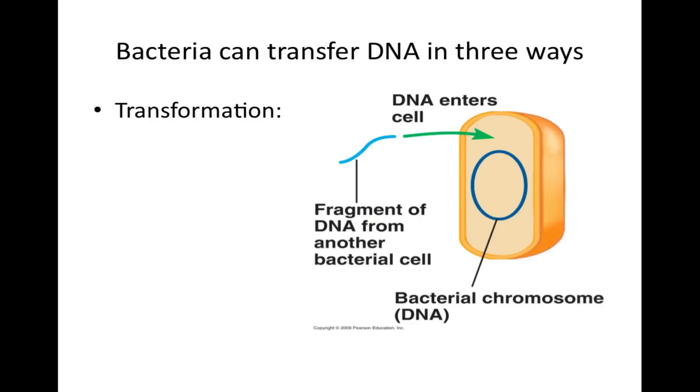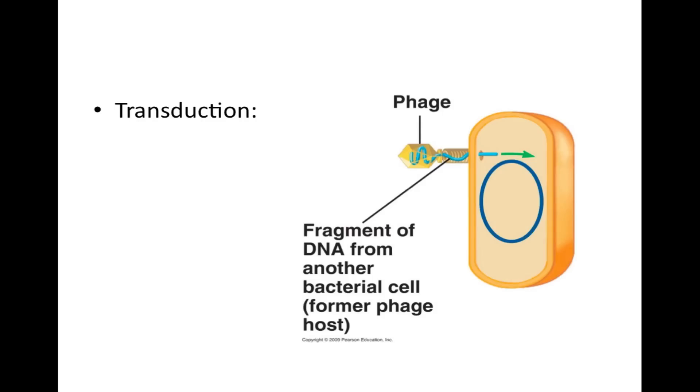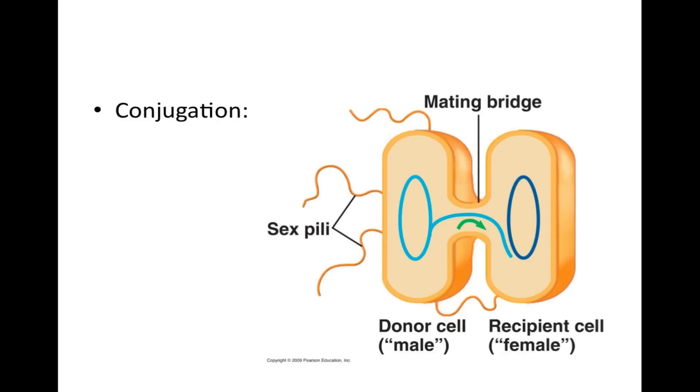Bacteria can transfer DNA in three ways. First, we have transformation, which is the uptake of foreign DNA from the surrounding environment. Next, we have transduction, the transfer of bacterial genes by a phage. Finally, we have conjugation, a physical union of cells and the DNA transfer between them. The donor cell has sex pili that binds to the recipient cell that gets pulled to form a mating bridge.